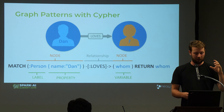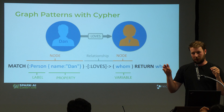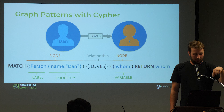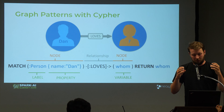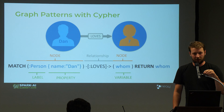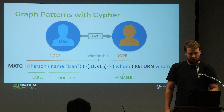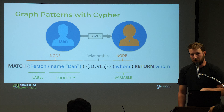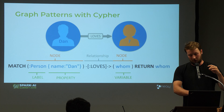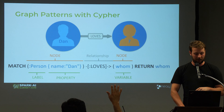You can see the pattern graph as a visualization: Dan loves a question mark on the right side, meaning we want to extract what that question mark is. In Cypher, we use the MATCH keyword and so-called ASCII art to express what we're looking for. Round parentheses mimic what a node looks like, and arrows represent directed relationships. This query gets all nodes with label Person named Dan that love another node, and returns every connected node loved by Dan.